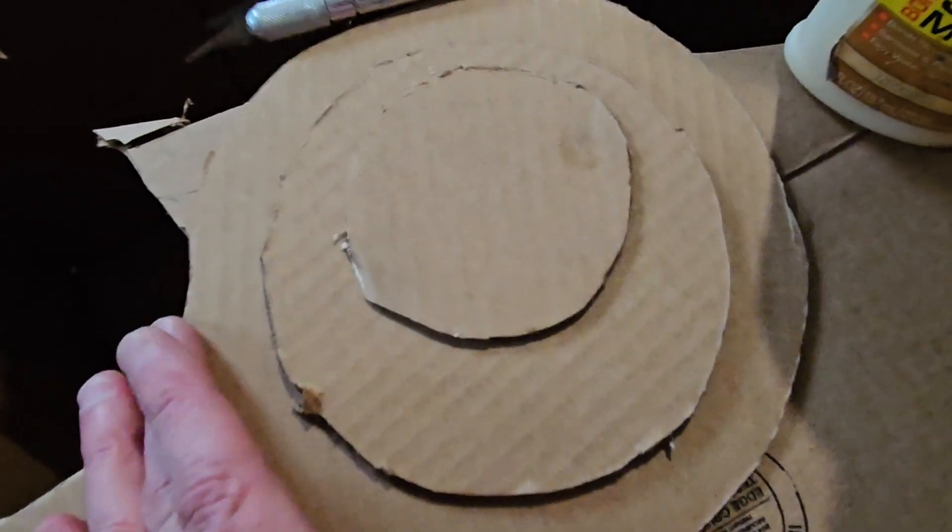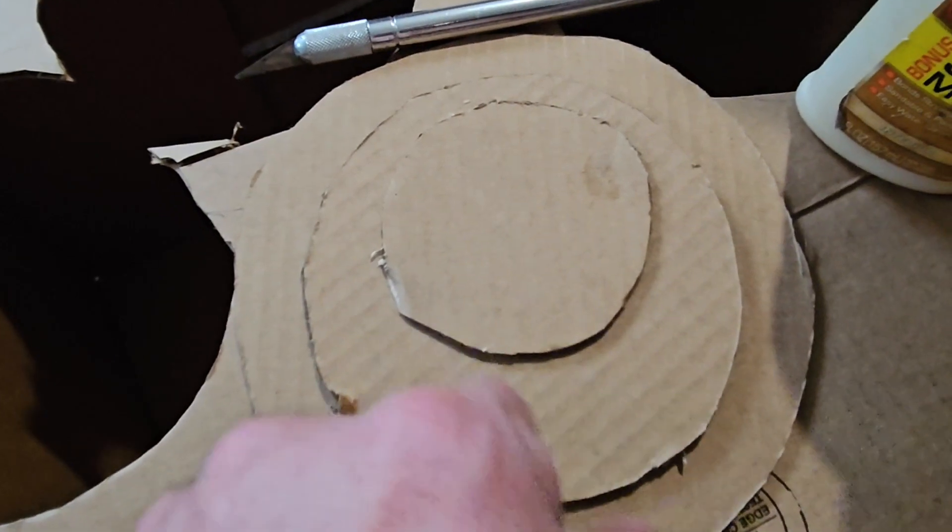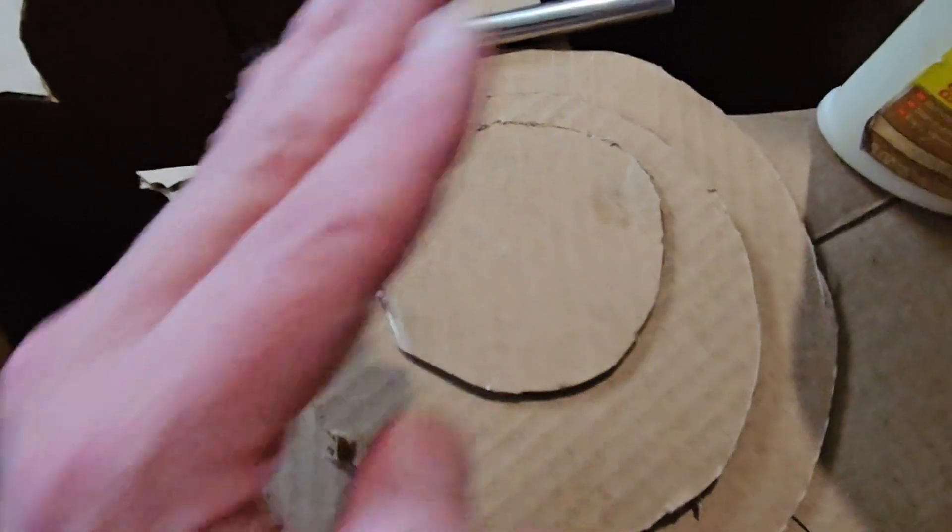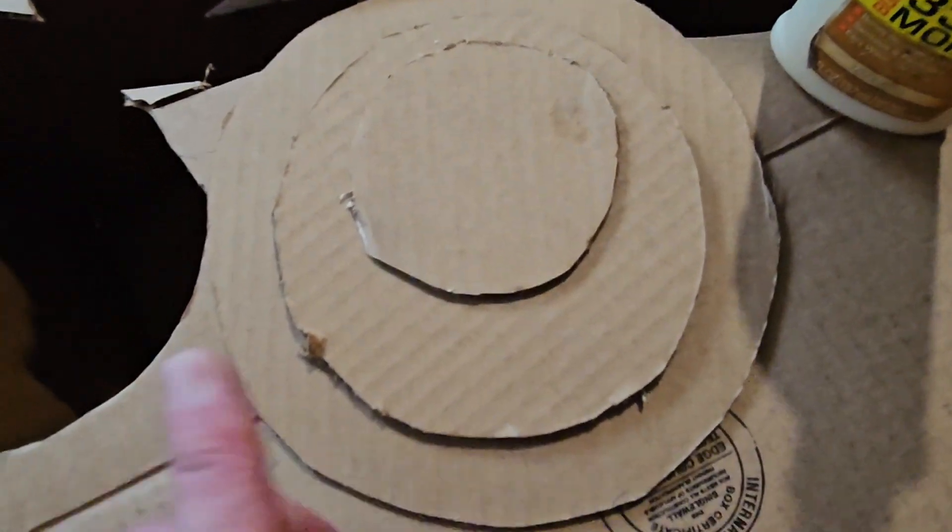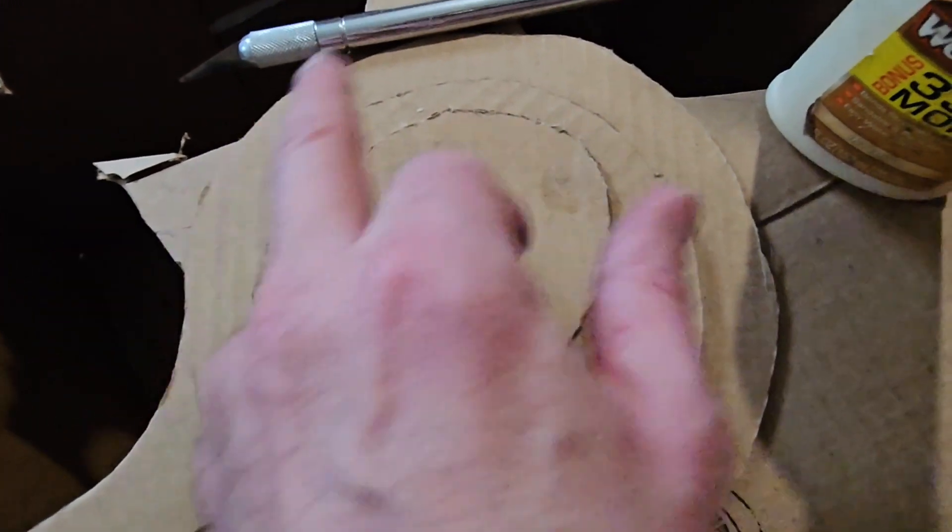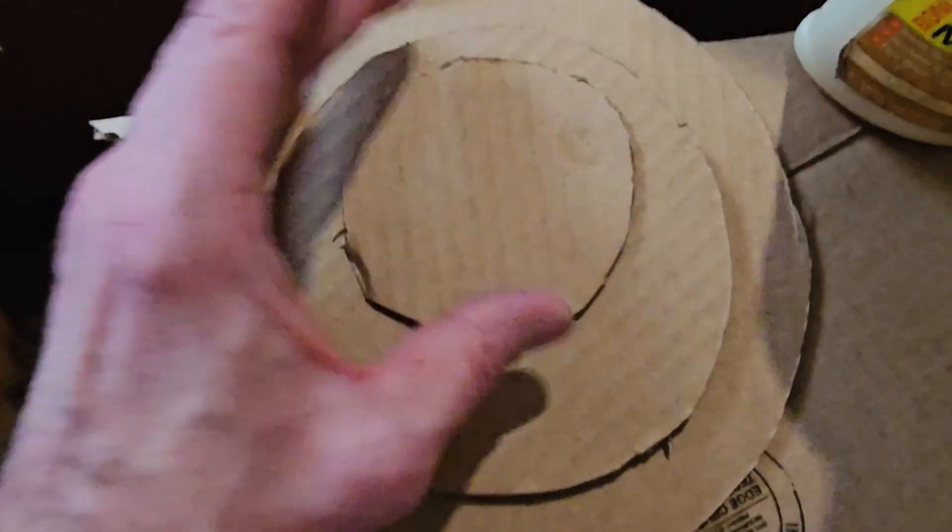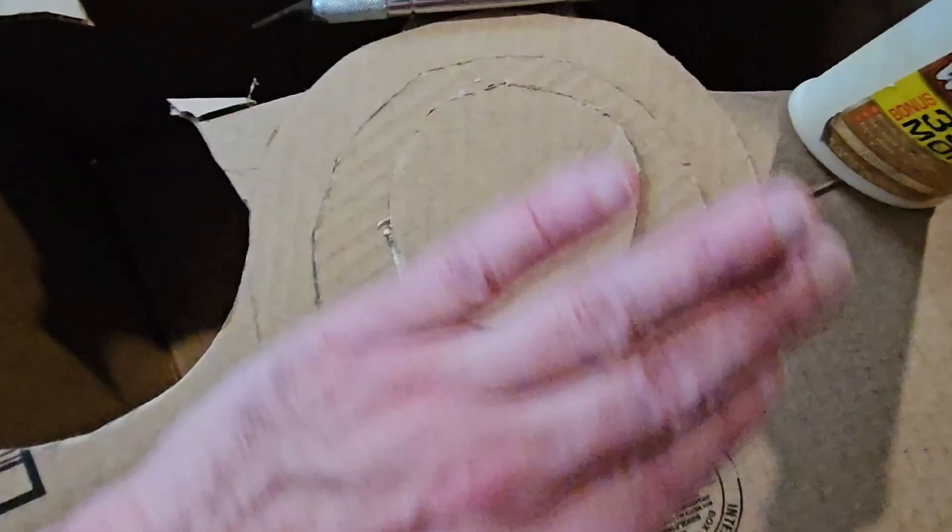So take your measurements and then graduate it up to wherever the middle of that concavity is. Now in my case with this glass jar, it's not perfectly symmetrical as far as the way that the concavity is.